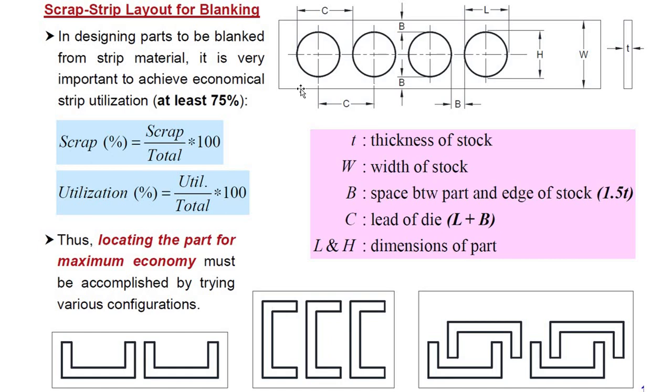See here, for blanking, in designing parts to be blanked from a strip material, it is very important to achieve economical strip utilization. At least 75% utilization has to be there and rest of the amount we can see as scrap. So to make the manufacturing process affordable, we need to ensure maximum utilization.